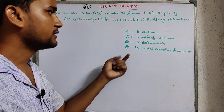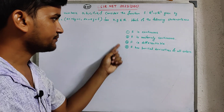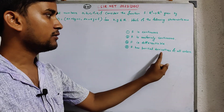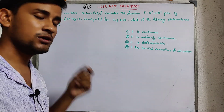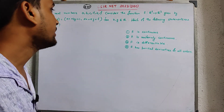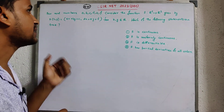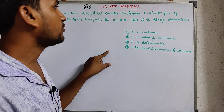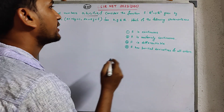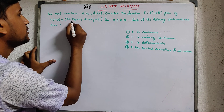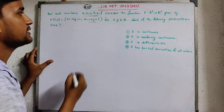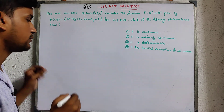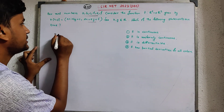This question mixes four topics: continuity, differentiability, uniform continuity, and also partial derivatives from calculus of several variables — functions of several variables. The question says: for real numbers a, b, c, d, e, f, consider the function F from R² to R² given by F(x,y) = (ax + by + c, dx + ey + f) for all (x,y) in R². Four options are given — which of the following statements are true?